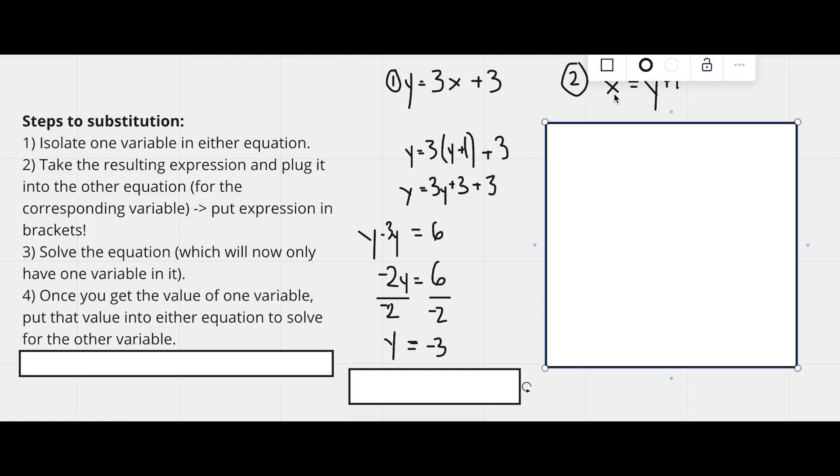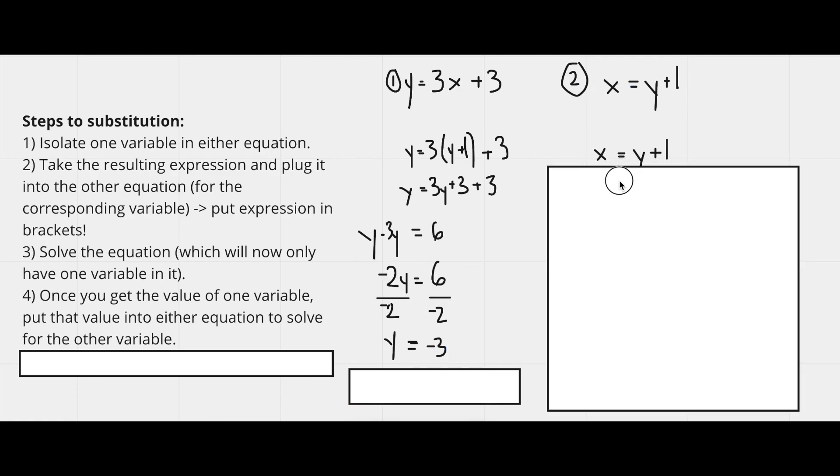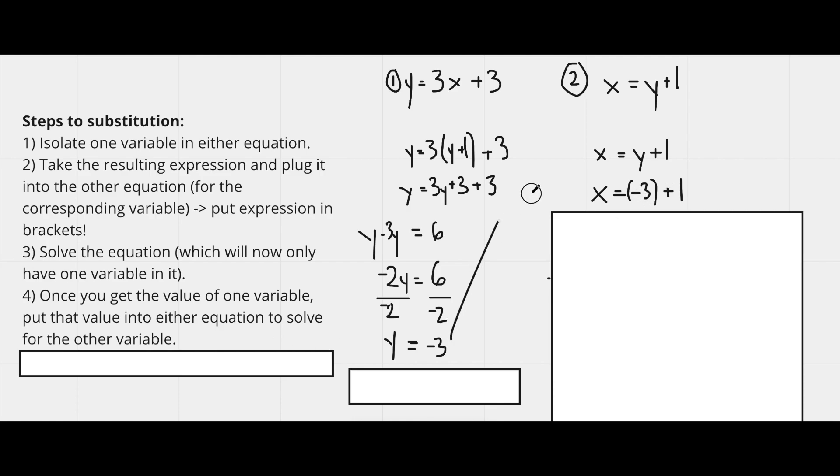So what I've done here is I took the y equals negative 3, and I've simply put it into this equation right here, x equals y plus 1. So now it becomes x equals negative 3 plus 1, because I have basically taken the y and put it into this equation right here. So negative 3 plus 1 evaluates to negative 2.